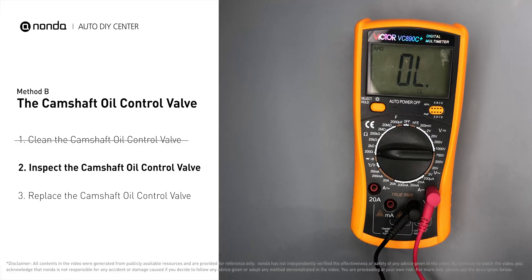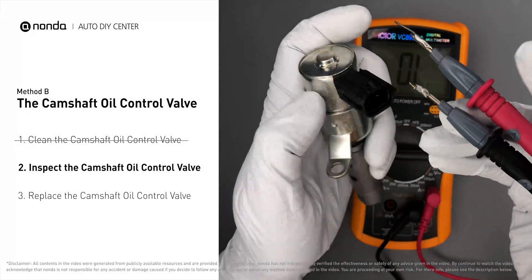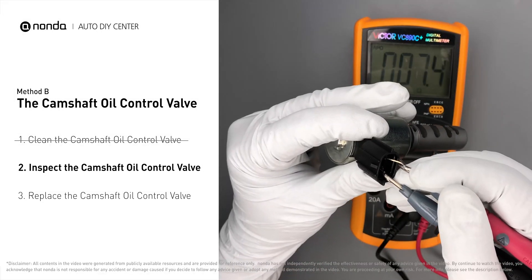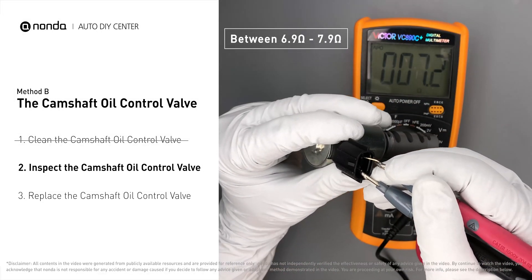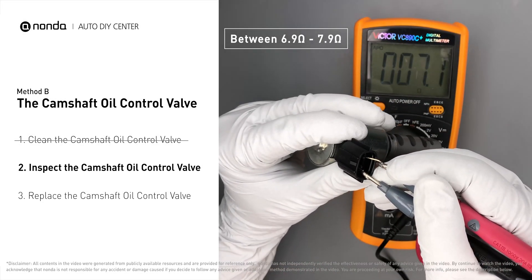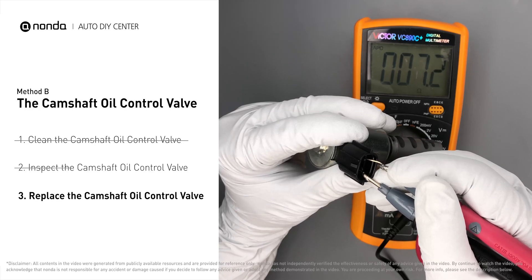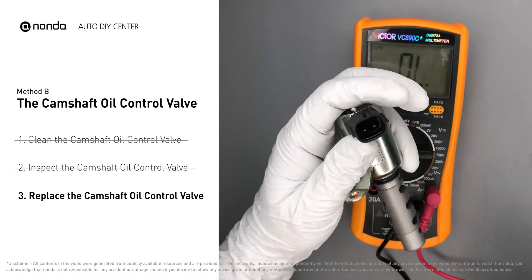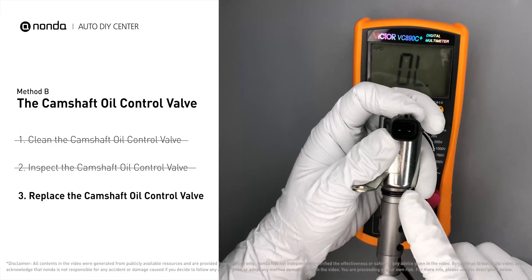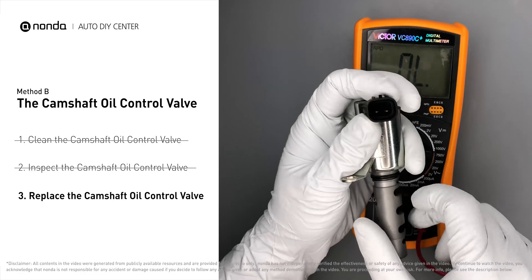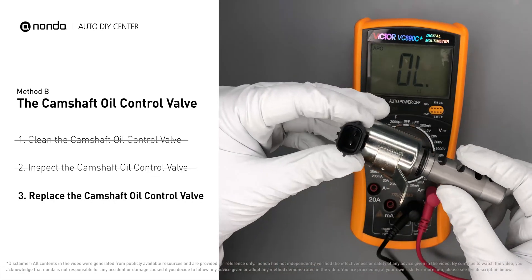In an ambient temperature of 68 degrees Fahrenheit, the valve resistance should be between 6.9 ohms and 7.9 ohms. If you do not get a reading, this indicates that the camshaft oil control valve is faulty and needs to be replaced.